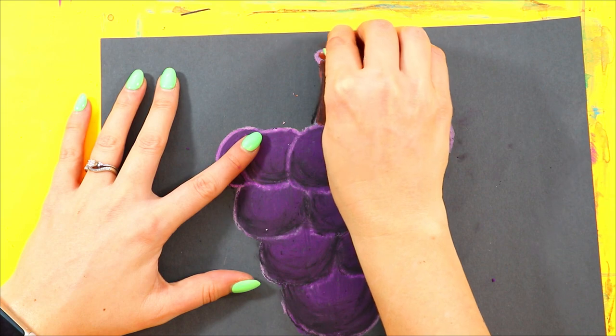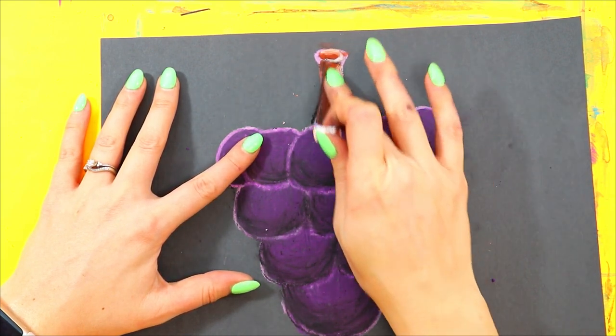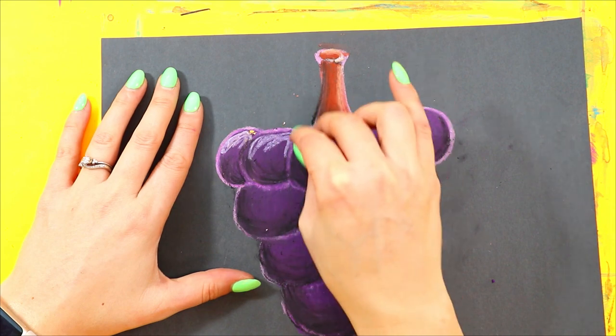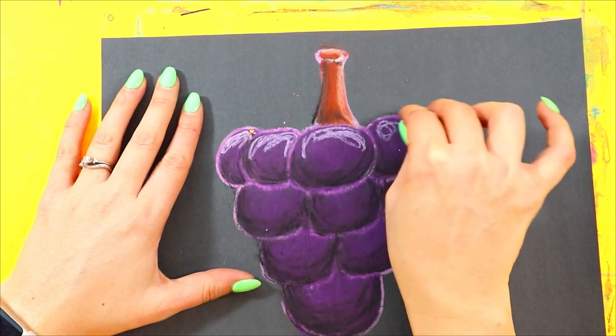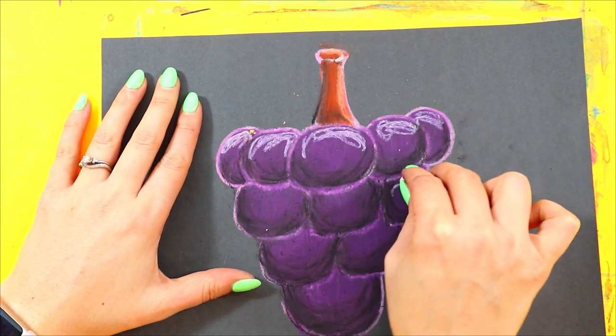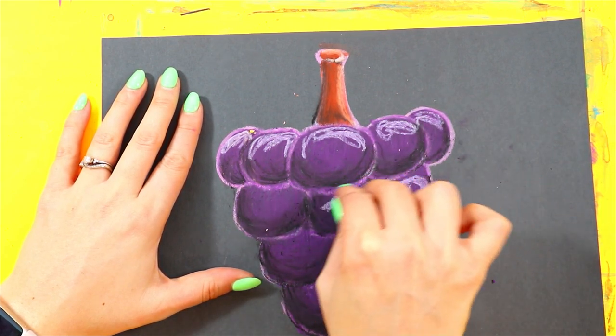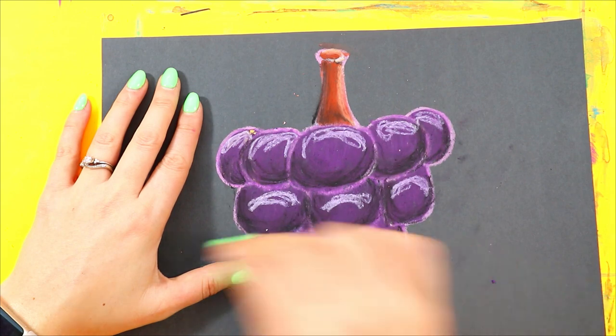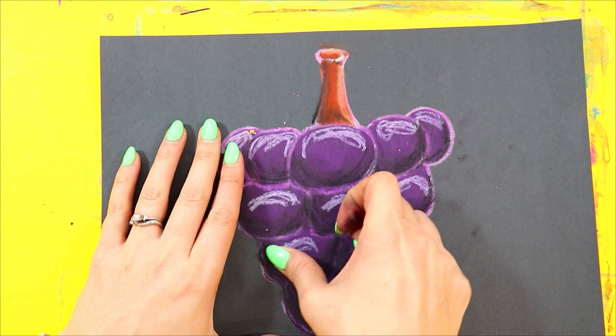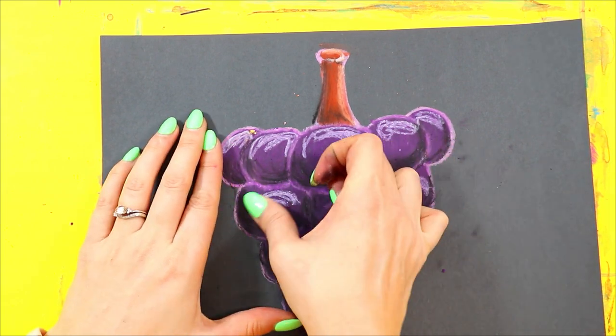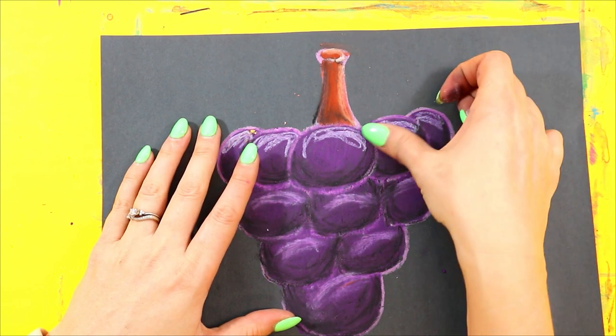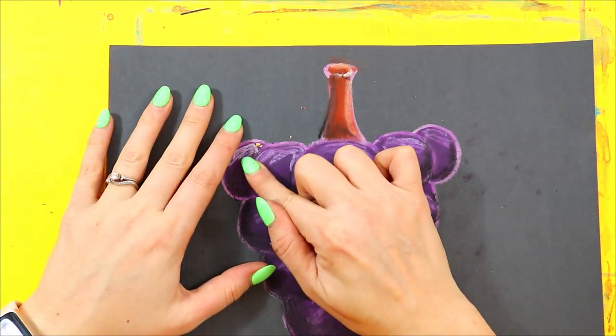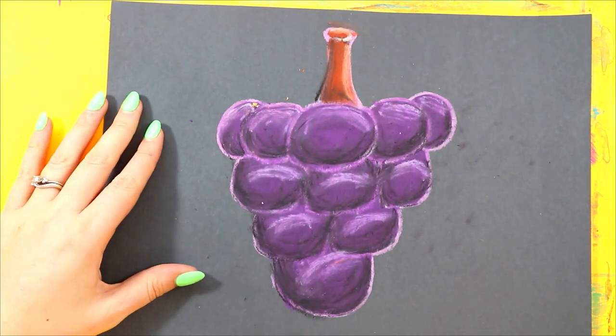Highlights. Light it in. Okay, we're going to highlight the top of each grape. Again, going with the shape, right? We don't want to go back and forth because the grape isn't flat, it's round. We go with the shape.